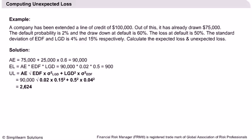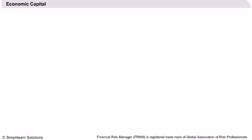Using this value in the expression for unexpected loss, we get the value of $3,640 as the unexpected loss. The expected loss is calculated as $900, which is far less than the unexpected loss as calculated in the slide. Economic capital — we find that the value of unexpected loss...